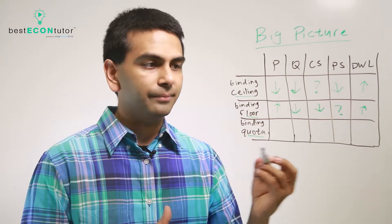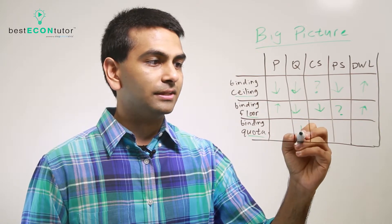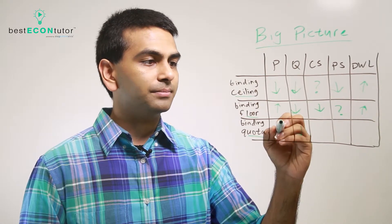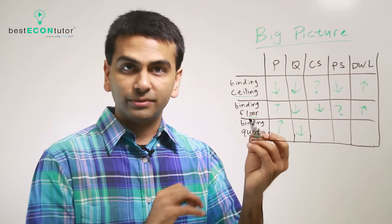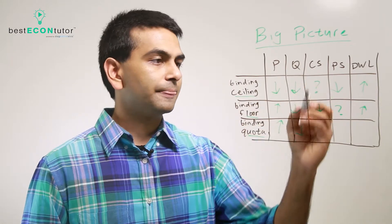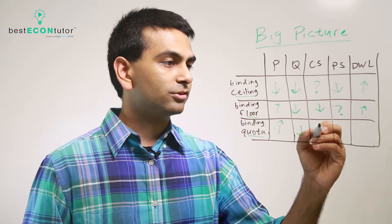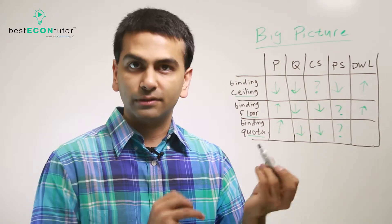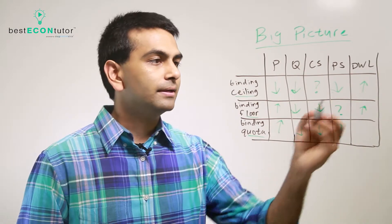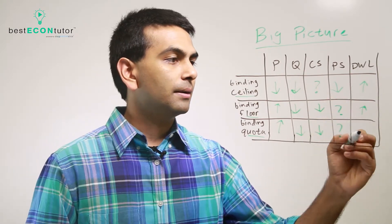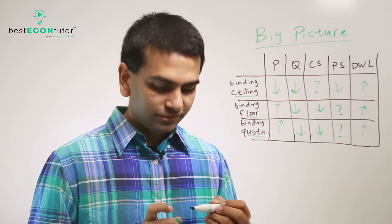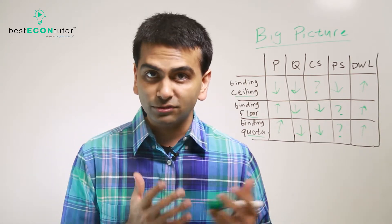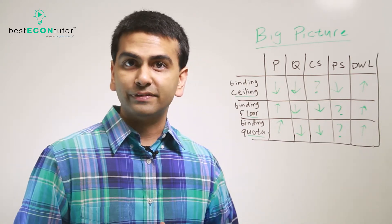A quota definitely lowers the quantity and raises the price to what consumers would pay. Consumer surplus goes down; producer surplus could go up or down depending on whether you're the quota holder. And a quota also causes deadweight loss. So in all three cases of government intervention, there is deadweight loss.